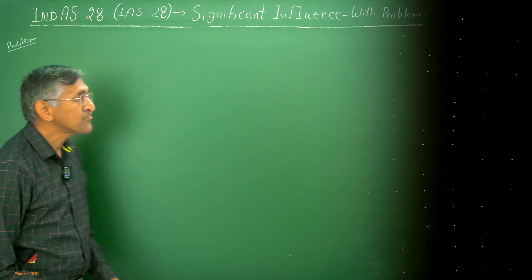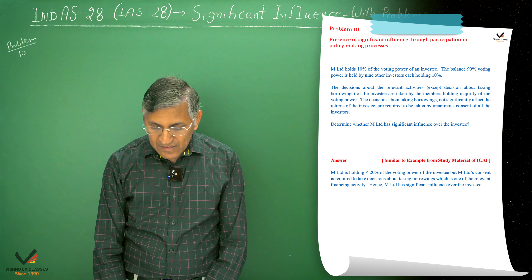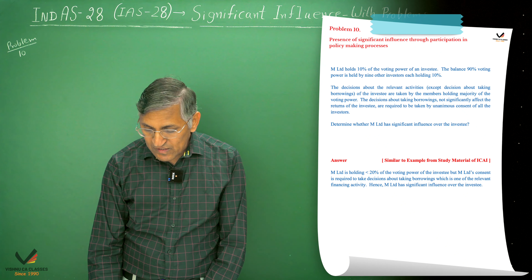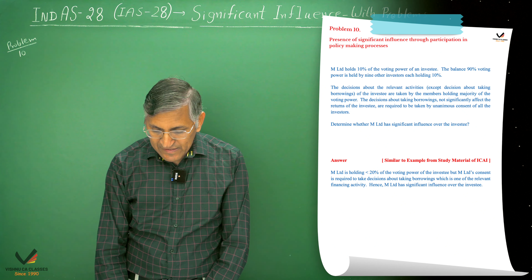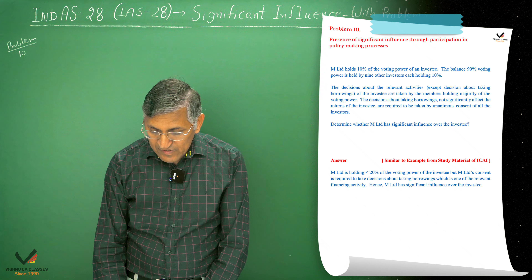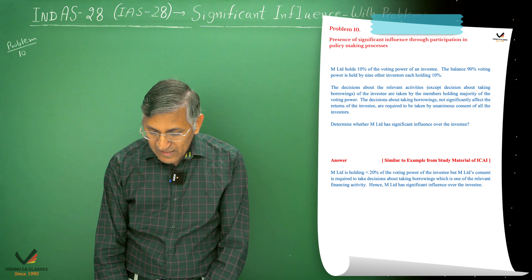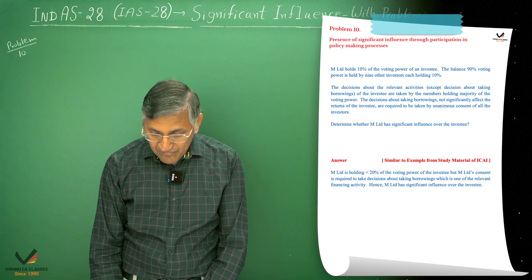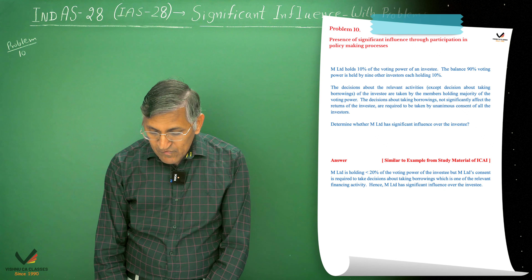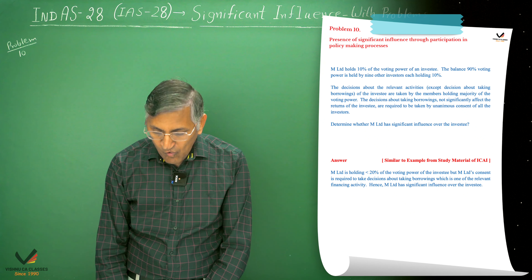Problem number 10. In this question, M Limited holds 10% of the voting power of the investee. The balance 90% of the voting power is held by 9 other investors, each holding 10%. Decisions about relevant activities — except decisions about taking borrowings — are taken by members holding majority of the voting power. However, decisions about taking borrowings require unanimous consent of all investors.